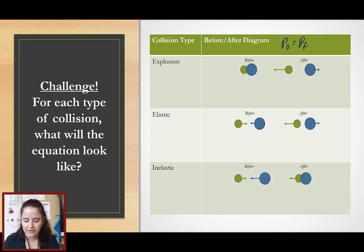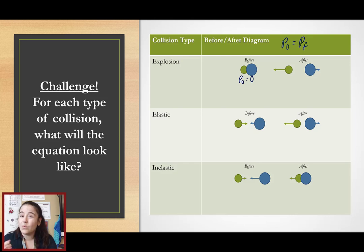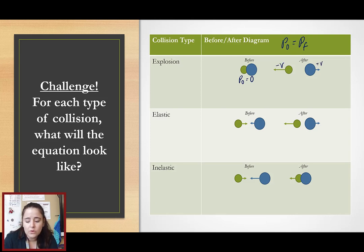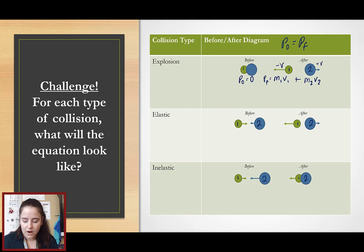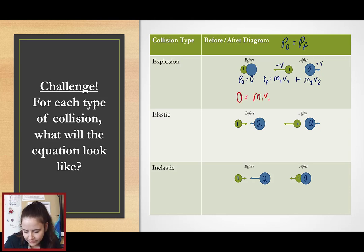It's all going to be P-naught equals P-final. Let's think about an explosion collision and how this would apply. Before the collision, is the object moving? No. So we know that P-naught will equal zero. After the collision, both of the objects are moving in opposite directions. I would say this is a negative velocity and this is a positive velocity. I could calculate the momentum of object 1 — we'll call all the greens object 1 and all the blues object 2 — as M1 times V1, and the momentum of object 2 as M2 times V2. Those added together will be our final momentum. So our equation becomes: zero equals M1·V1 plus M2·V2, with these being the after-the-collision values.